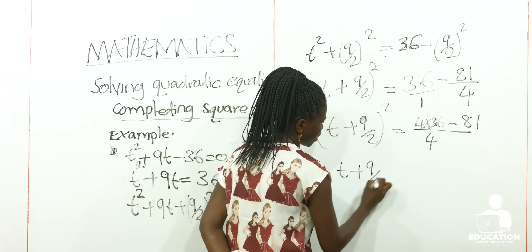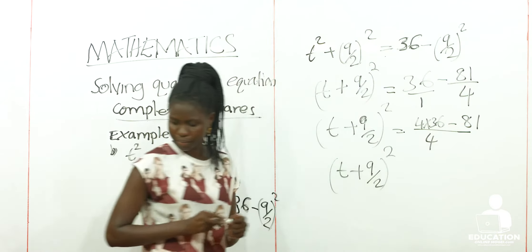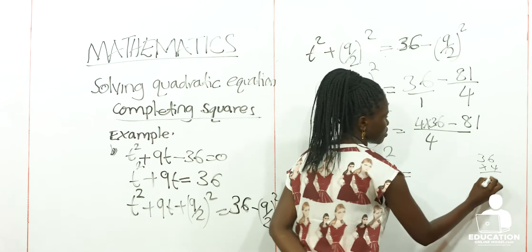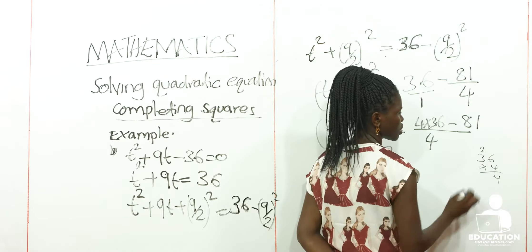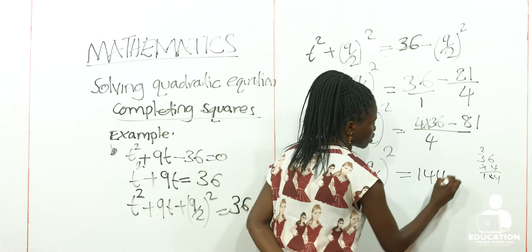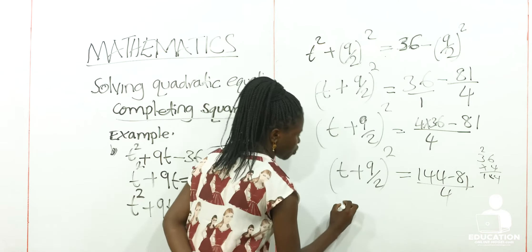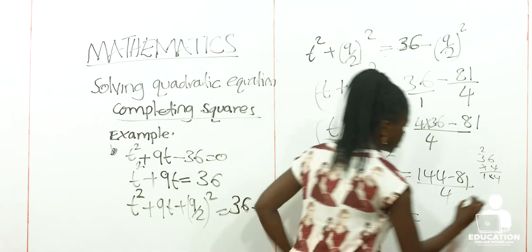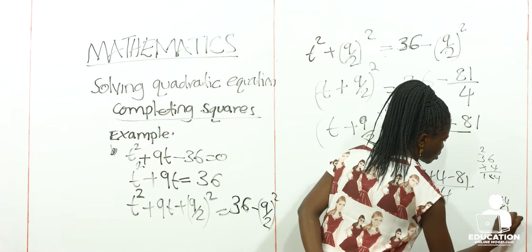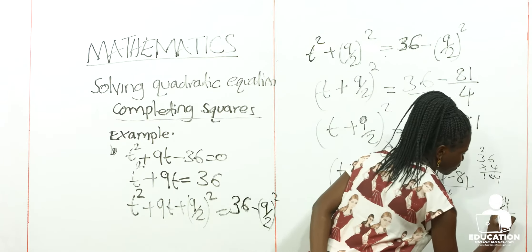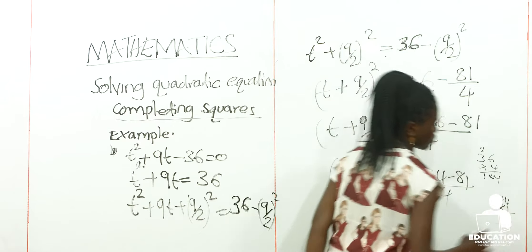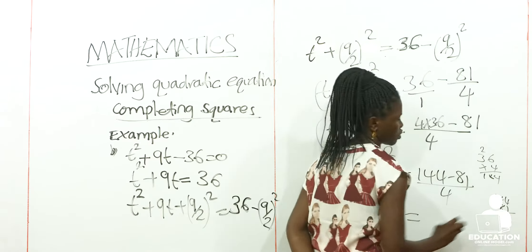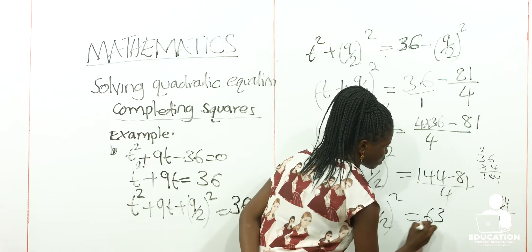So we maintain (t + 9/2)² on this side. 36 by 4: 4 times 36 is 144, minus 81 out of 4. So we maintain (t + 9/2)². This gives us 144 minus 81: that is 14 minus 8, which is 63. So we are now going to have 63 over 4.